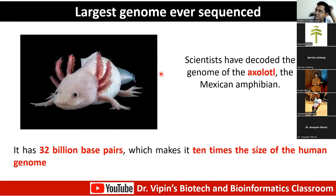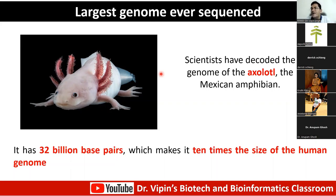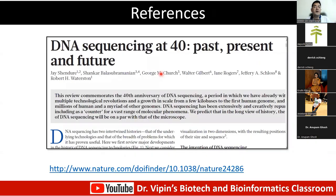The largest genome ever sequenced is the axolotl genome, which leads us to the C-value paradox. The C-value paradox essentially says that genome size does not have any correlation with the complexity of the organism. Axolotl salamanders have DNA 10 times larger than the human genome. One review you can refer to is 'DNA Sequencing at 40: Past, Present and Future.'